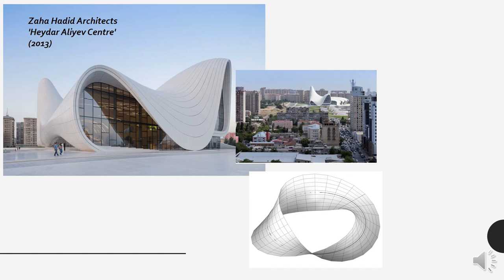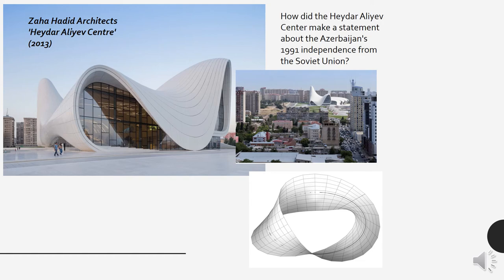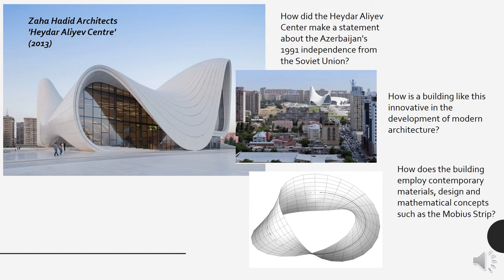We also study architecture extensively, so for those thinking that architecture might be the route for them, this will provide a wonderful contextual understanding of some really important buildings. Zaha Hadid's design for the Haydar Aliyev Centre is a really interesting structure. We may ask how did it make a statement about Azerbaijan's 1991 independence from the Soviet Union, how is a building like this innovative in the development of modern architecture, and how does it employ contemporary materials, design and mathematical concepts such as the Möbius Strip?